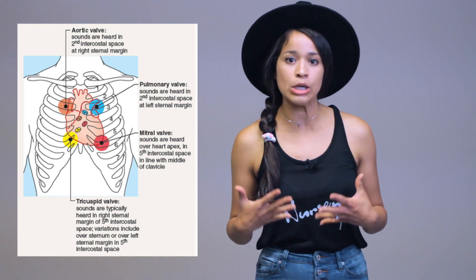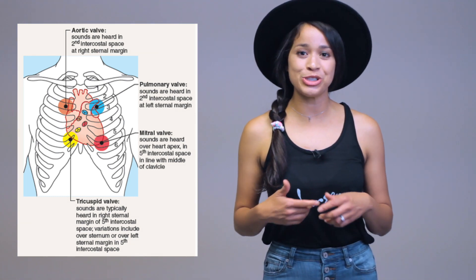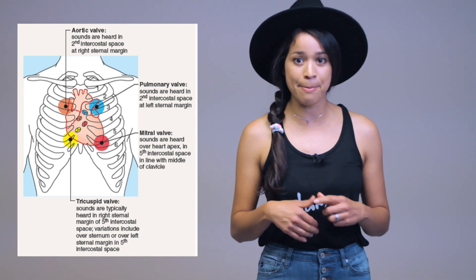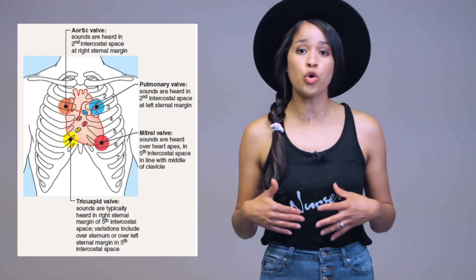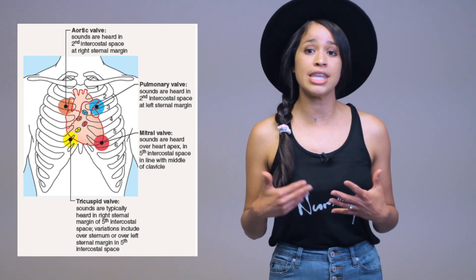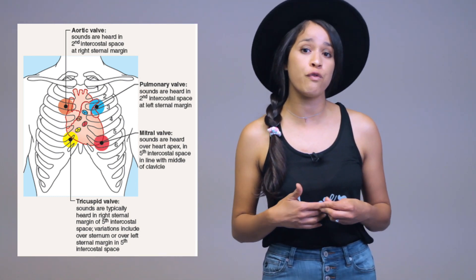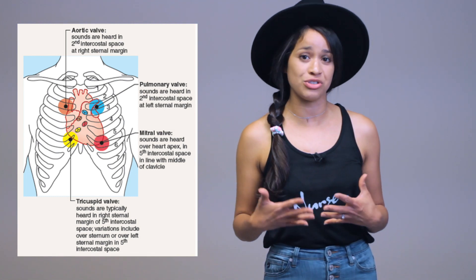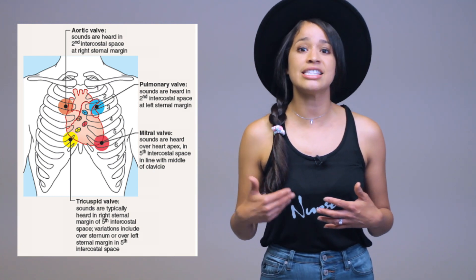You want to know anatomically where to place your stethoscope to identify the location of the murmur. This includes your aortic, pulmonic, tricuspid, and mitral valves. Your aortic valve is within your second intercostal space, your pulmonic valve is also within your second intercostal space, your tricuspid valve is your fourth or fifth intercostal space, and your mitral valve — also referred to as the apex — is the fifth intercostal space.